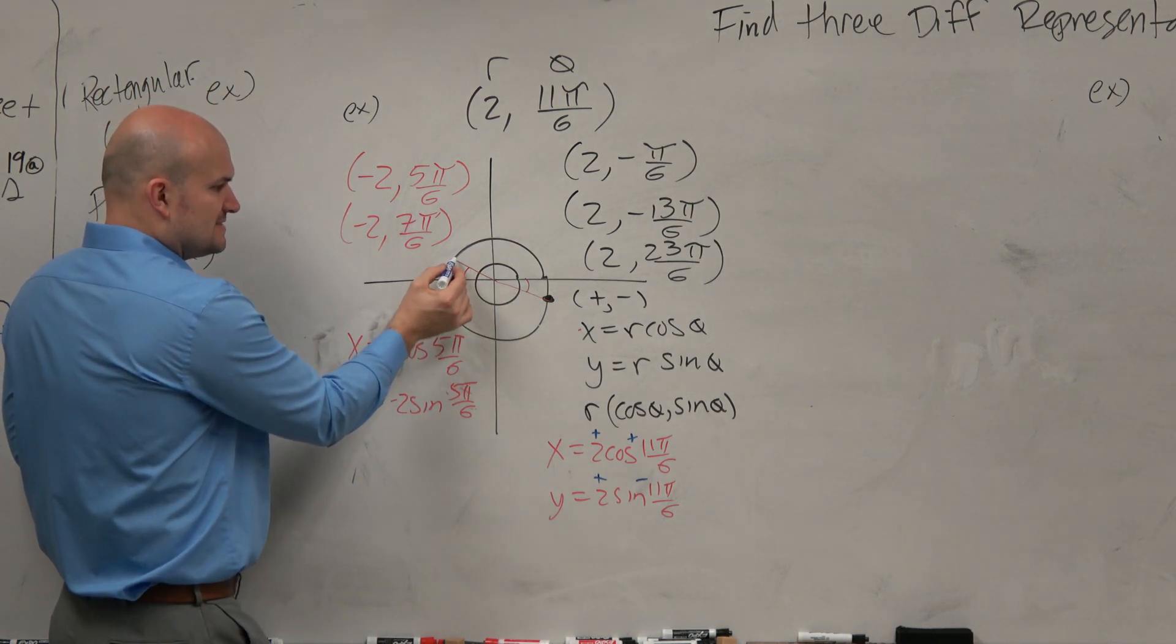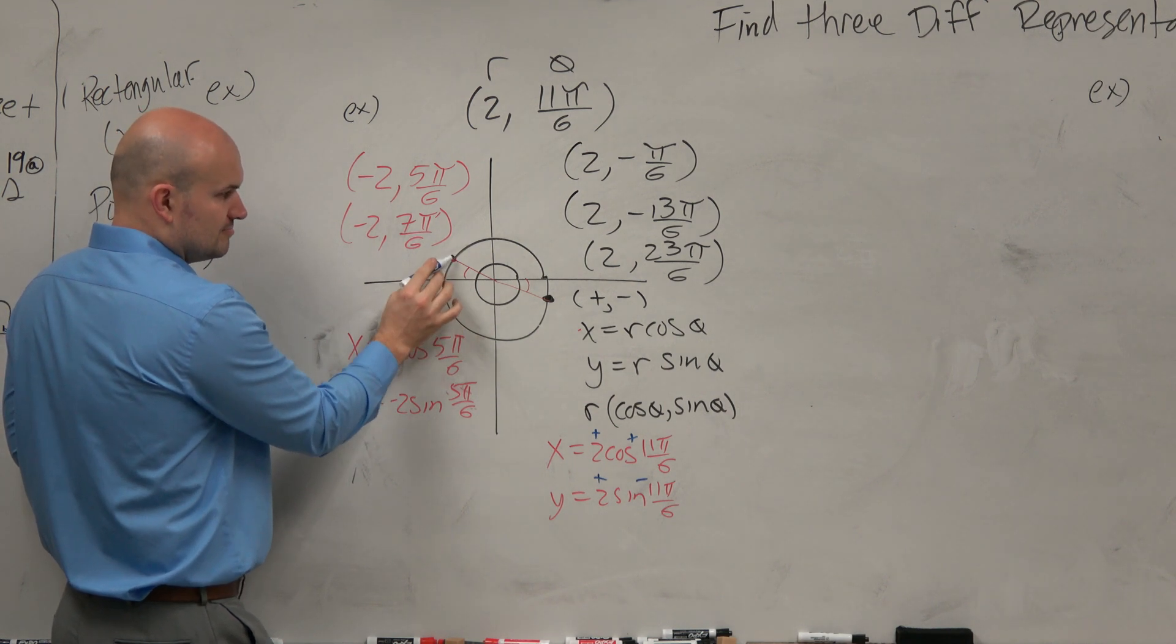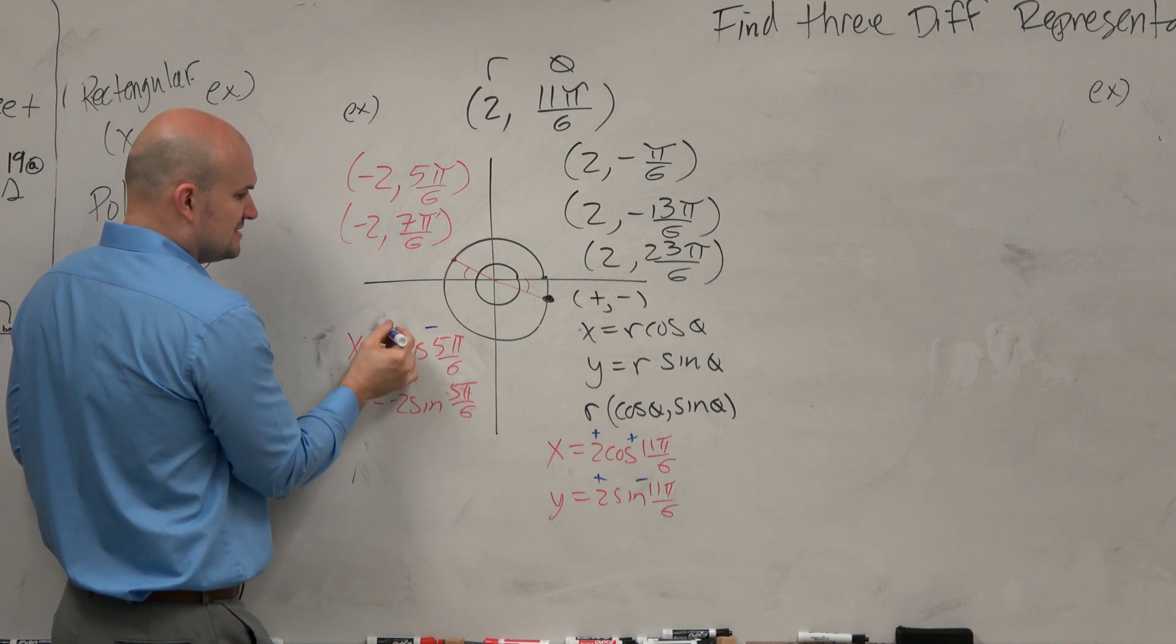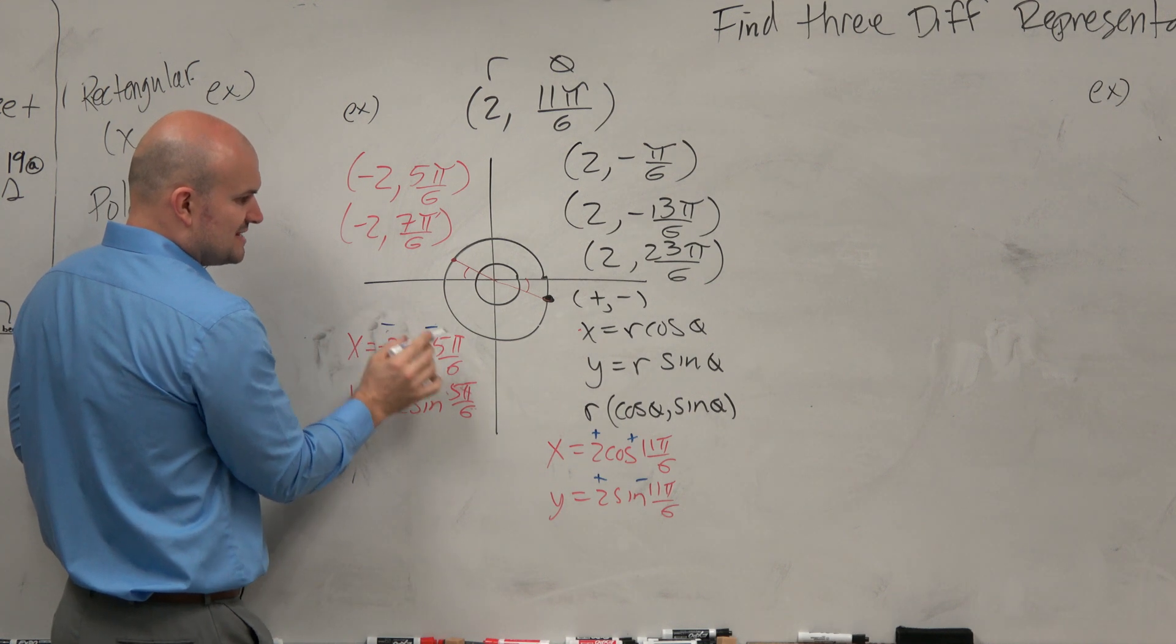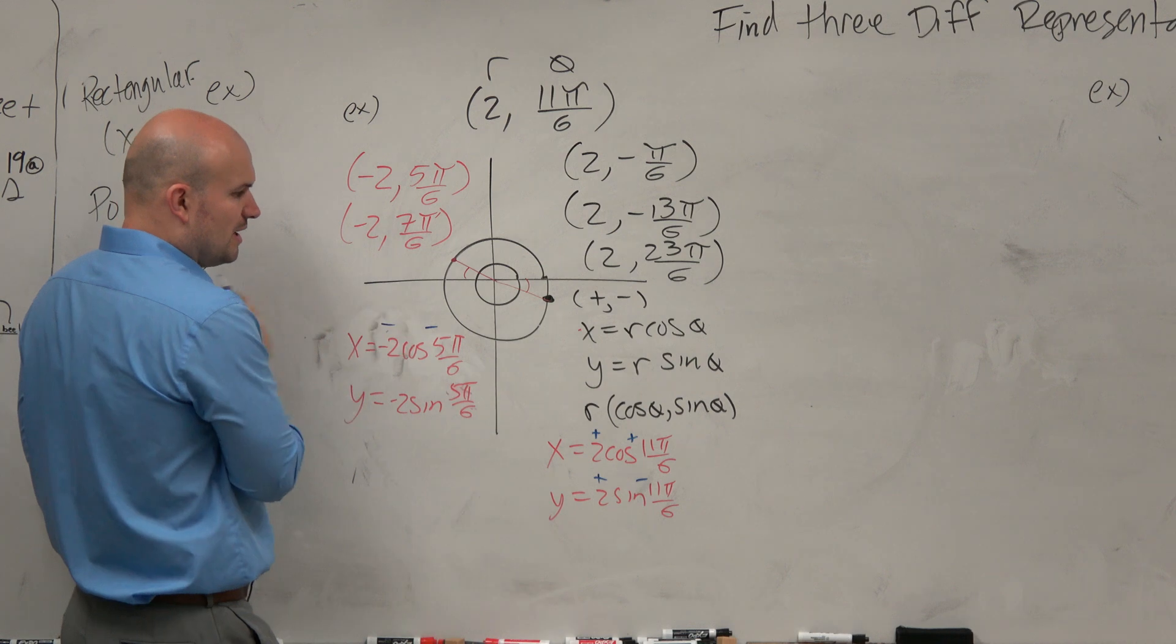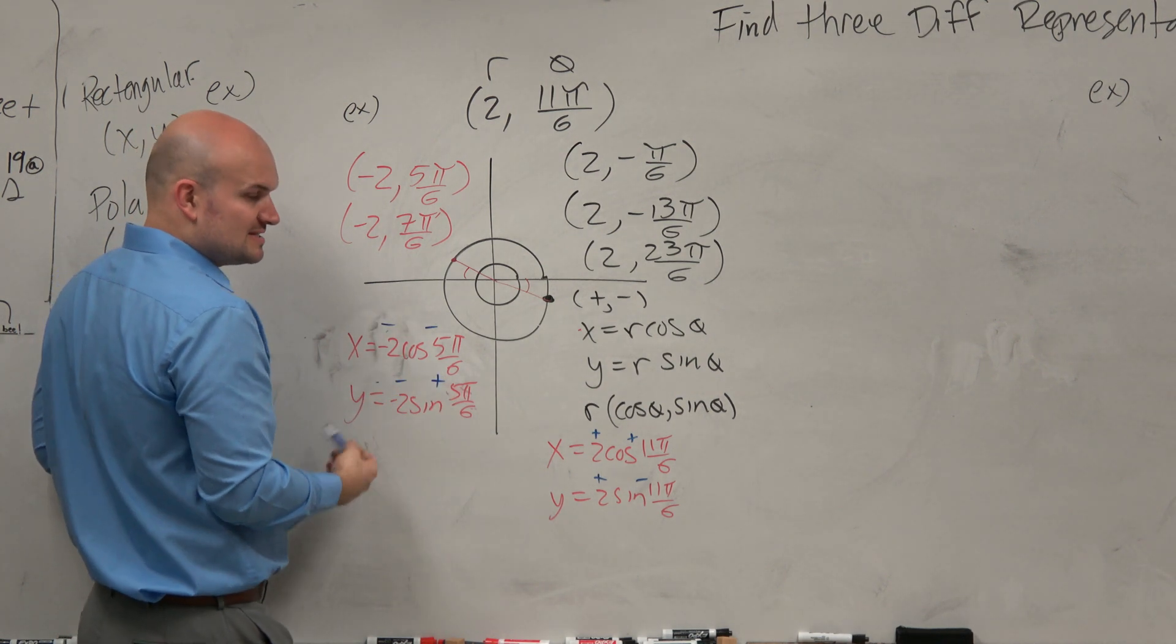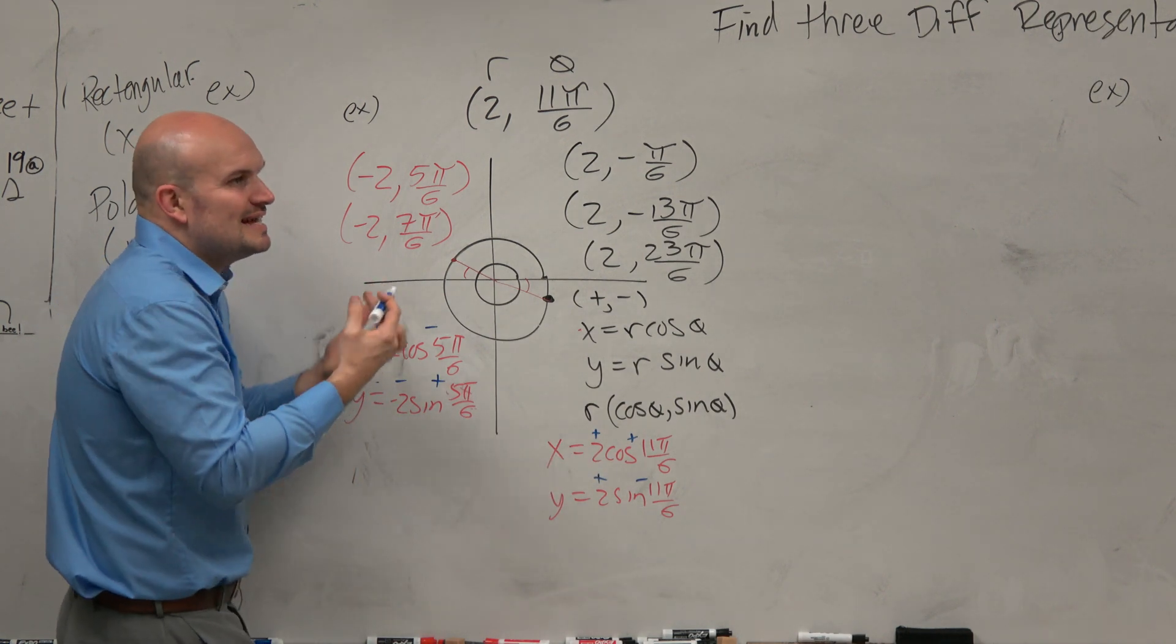They do. They have the same reference angle. They're going to have the same coordinate point. The positive and negatives are different, but they have the same coordinate point. So over here, cosine of 5π over 6, is that positive or negative? Hold on. Negative. Negative times a negative is—and that's a negative 2. Negative times a negative is the same thing as a positive times a positive. The sine of 5π over 6 is what? Positive. Negative 2. Negative times a positive is the same thing as a positive times a negative. You're going to get the same points.